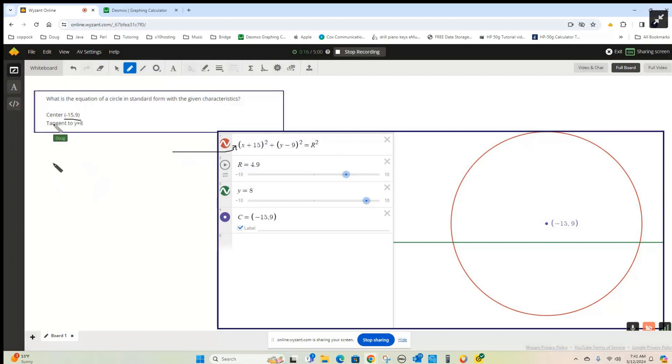So if the center is at (-15, 9), that allows you to write (x minus negative 15) squared, plus (y minus the y-coordinate of the center, 9) squared. And all that remains is for us to figure out what the radius of that circle is and square it.